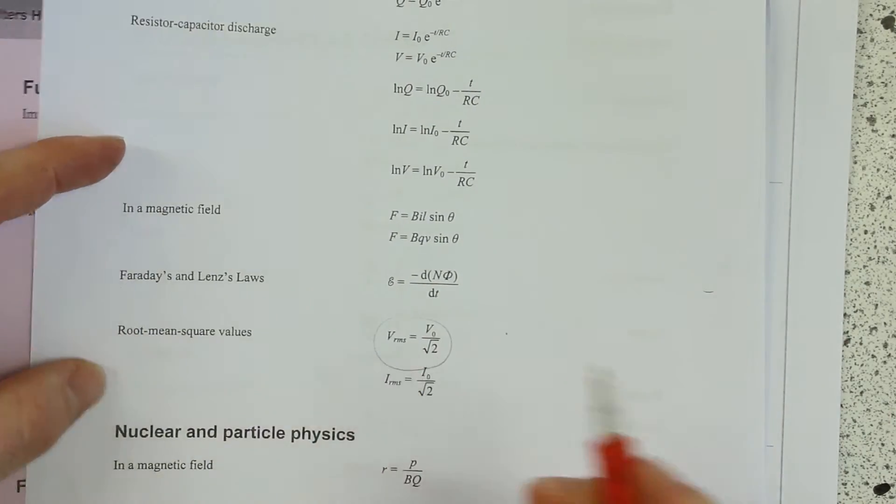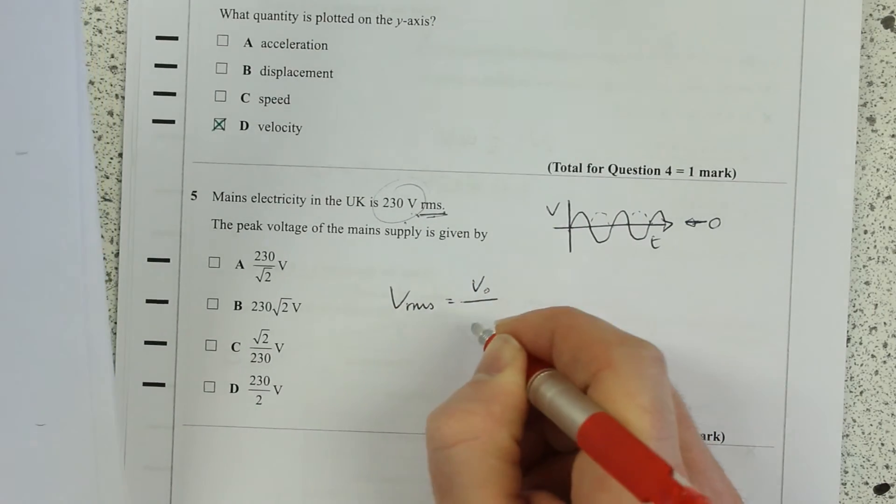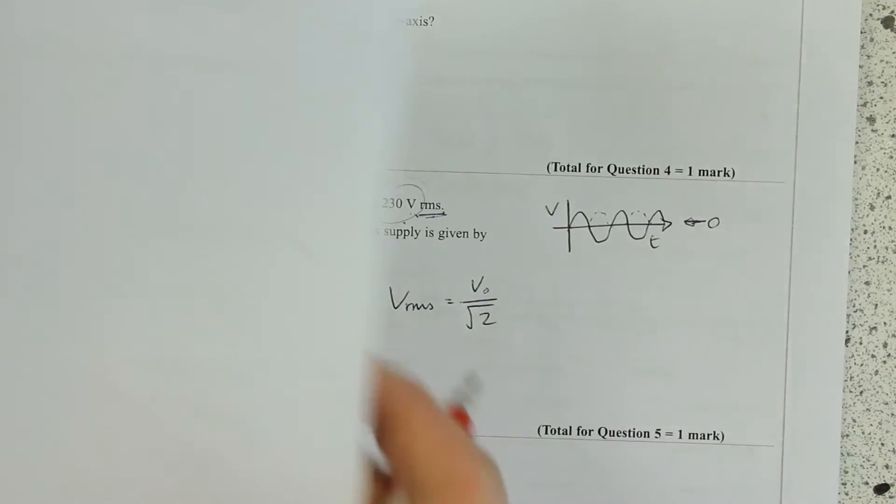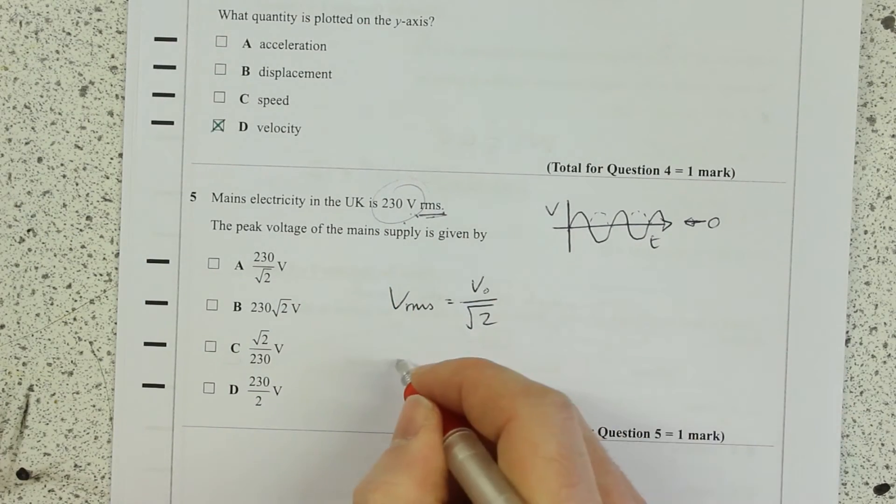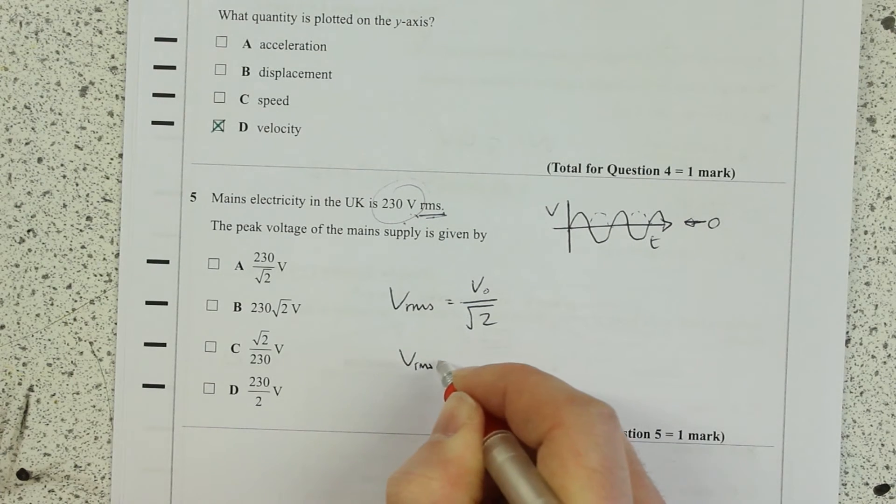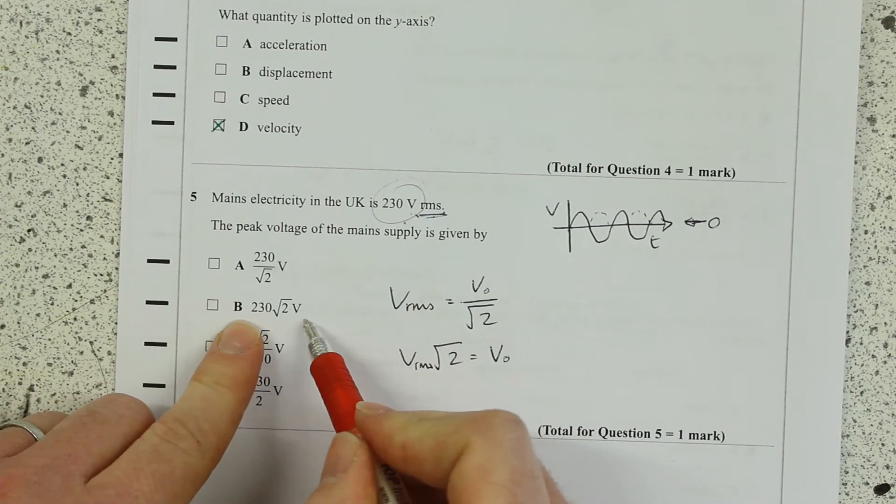You can see there's a relationship between V_RMS and V_naught, which is the peak, and it's a root 2 relationship. So simply rearrange that for V_naught gives you V_RMS times root 2, which is V_naught, so it's going to be this one.